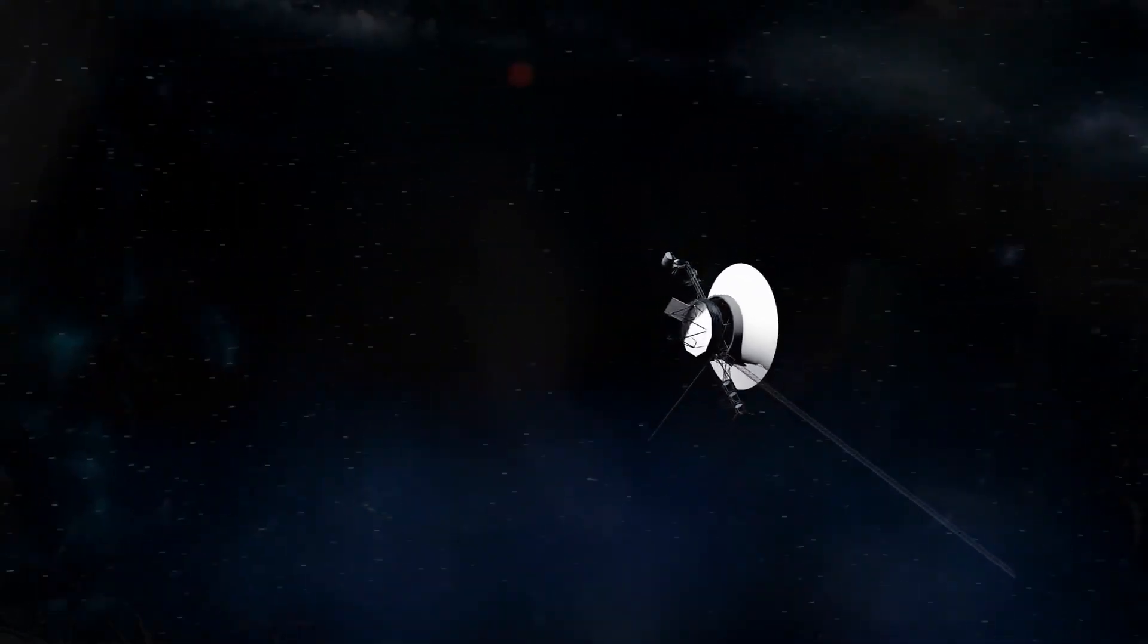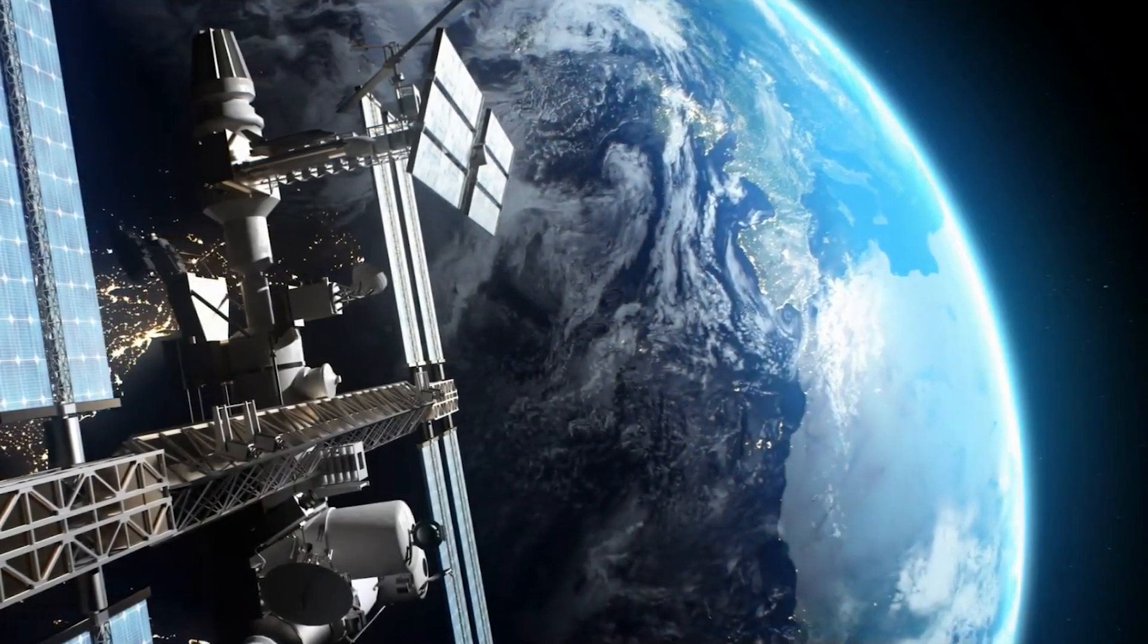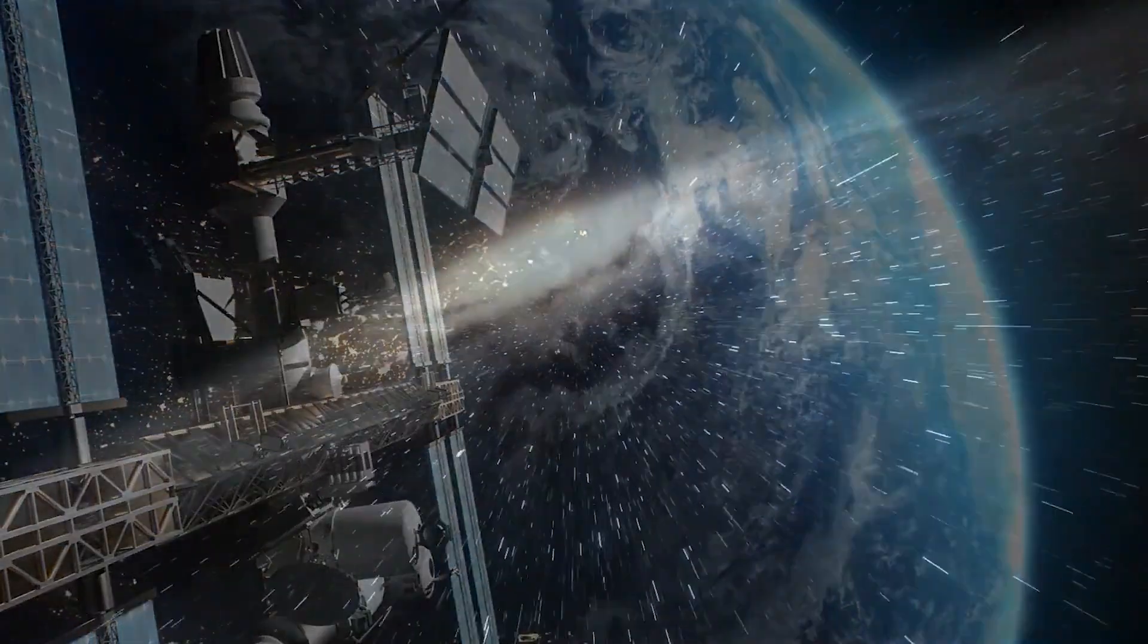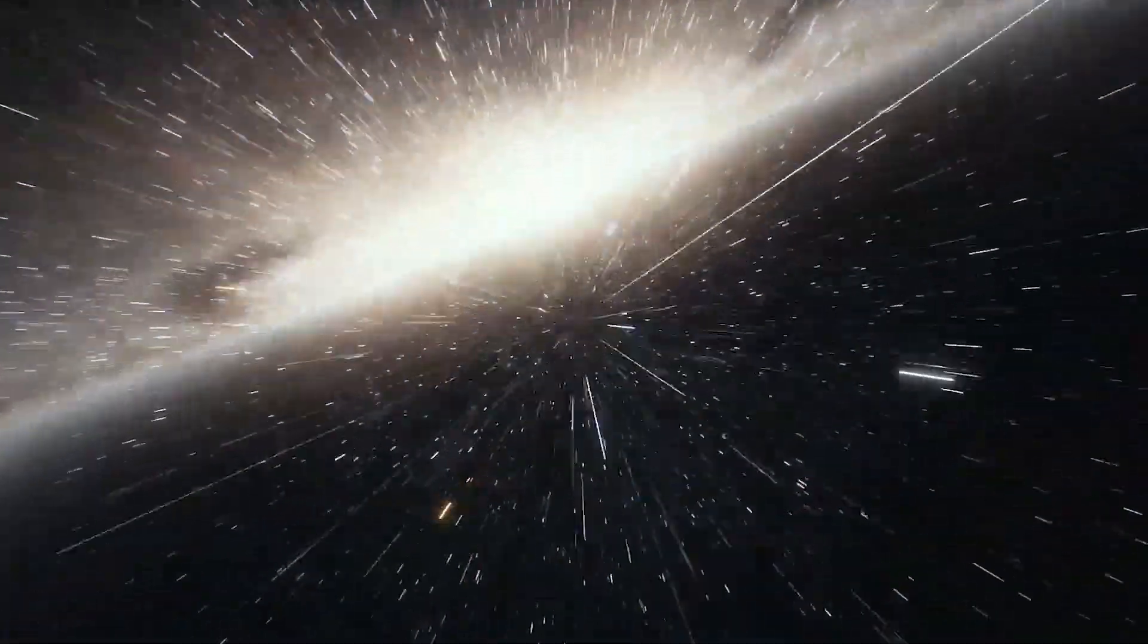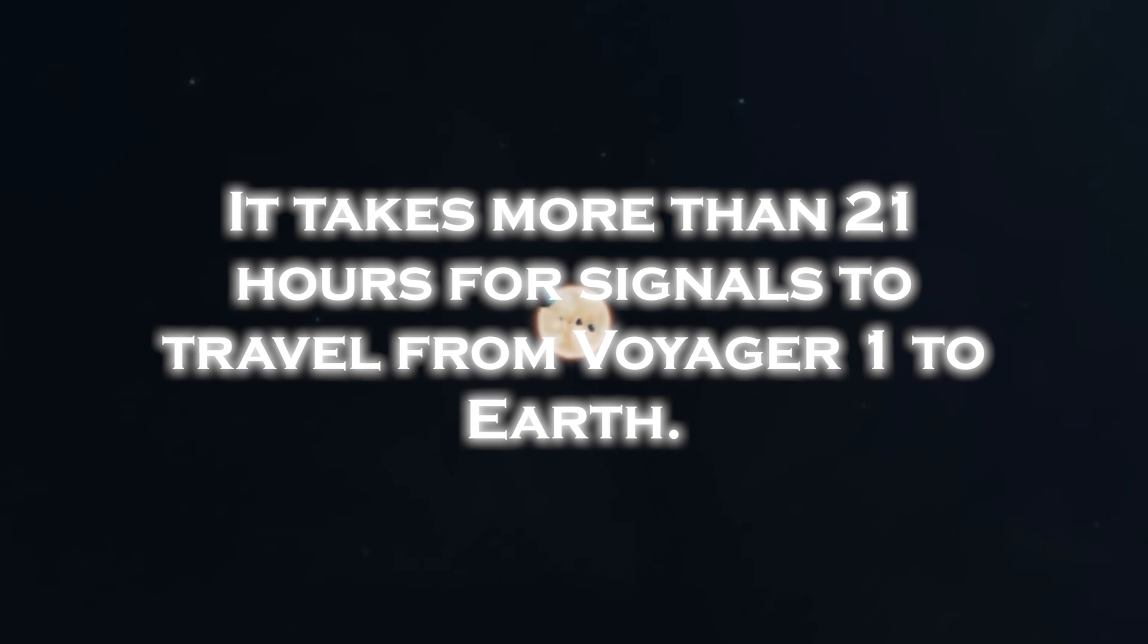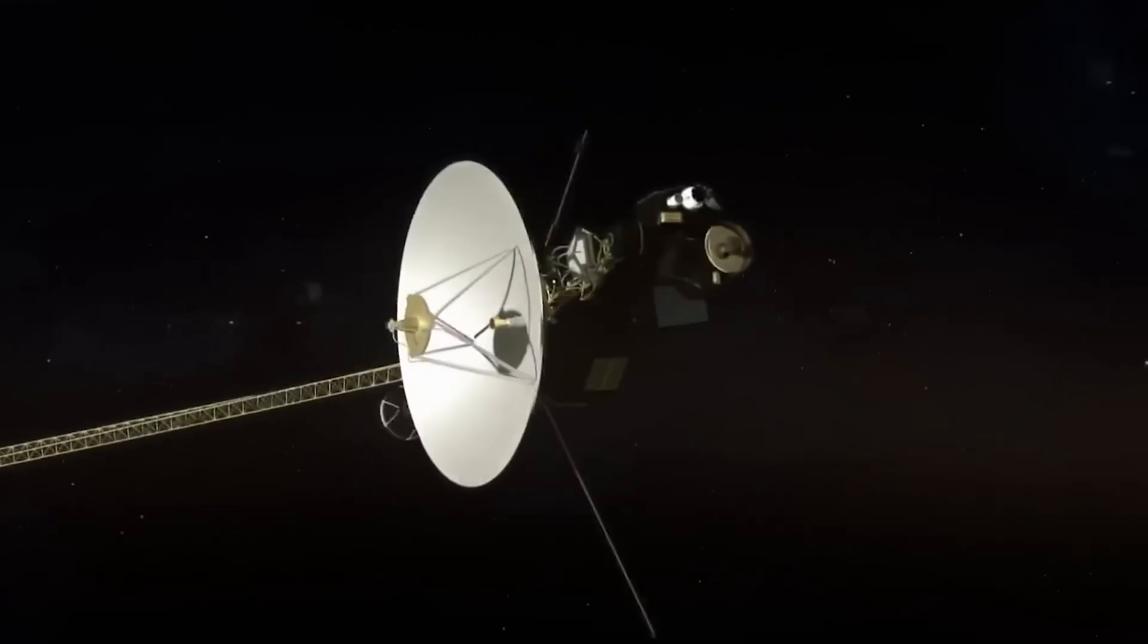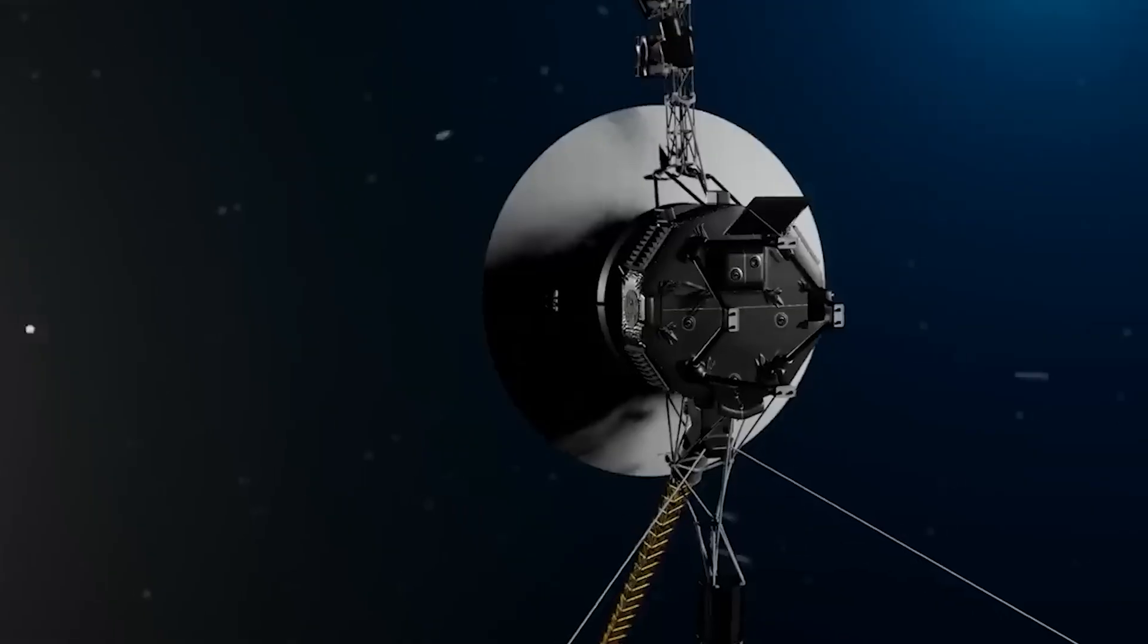Even in its current state, it is still very valuable to us. However, the great distance between Voyager 1 and Earth presents a significant challenge to maintaining effective communication. As the spacecraft ventures into interstellar space, Voyager 1's signal strength has weakened. It takes more than 21 hours for signals to travel from Voyager to Earth. The weak signal, combined with interference from background noise, makes it difficult to transmit and receive data.